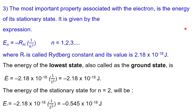Now let's substitute. For the lowest state, n equals 1: energy is negative 2.18 into 10 raise to negative 18 joule — this is the ground state energy. For n equals 2: we calculate negative 2.18 into 10 raise to negative 18 into 1 by 2 squared, which gives negative 0.545 into 10 raise to negative 18 joule.